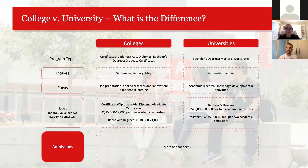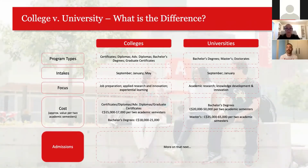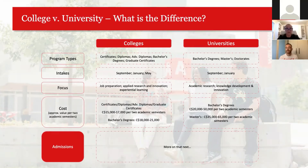There are five main areas in which colleges and universities differ in Canada. First, program types: colleges offer a wider variety — one, two, three, and four-year programs addressing different labor market needs — whereas universities traditionally offer bachelor's degrees, master's programs, and doctorates, along with some continuing education certifications.